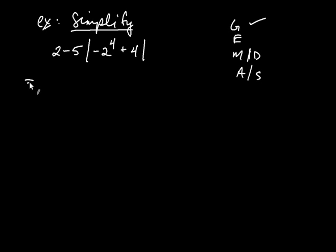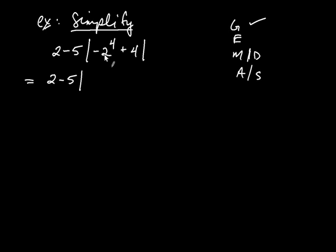I don't jump ahead and write 16 because that will throw off the spacing of my whole problem. Even though the 2 and the 5 have nothing happening to them, I still write them out. So it's 2 minus 5, absolute value of — 2 to the 4th is 16 and that negative is still there — so it's negative 16 plus 4.